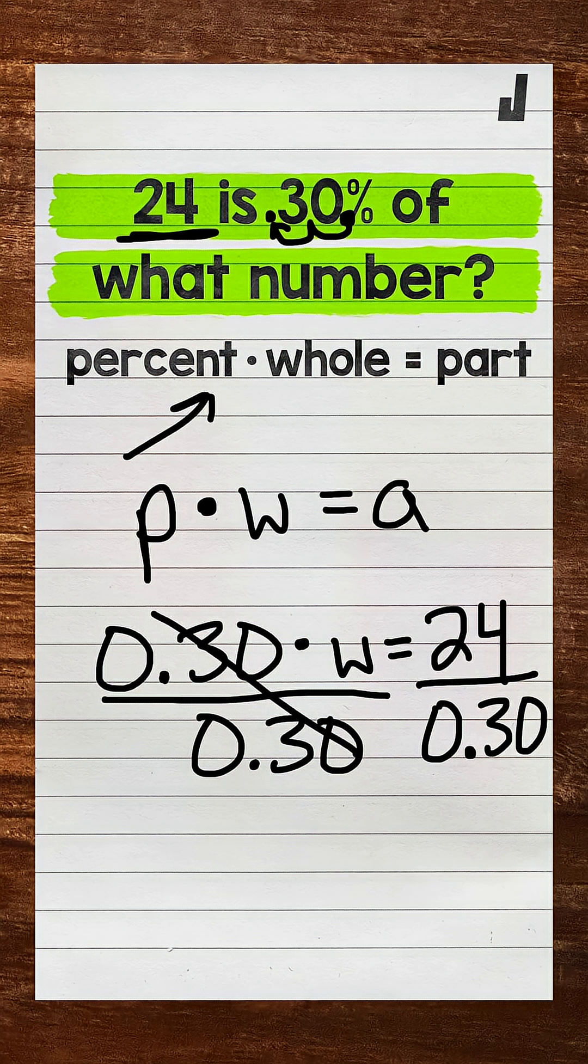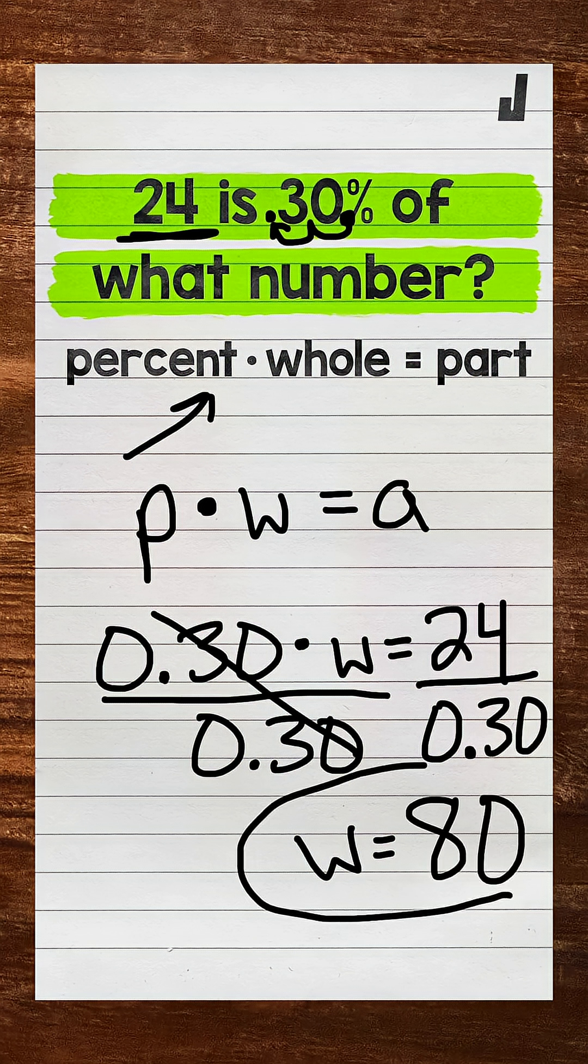The 30 hundredths on the left side of the equation cancel each other out. So W is now isolated. And then on the right, 24 divided by 30 hundredths gives us 80. So this is our whole. 24 is 30% of 80.